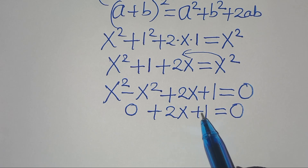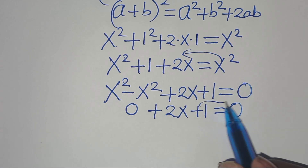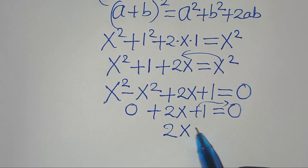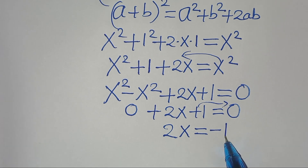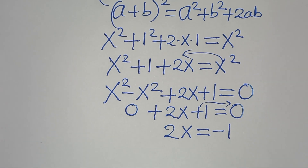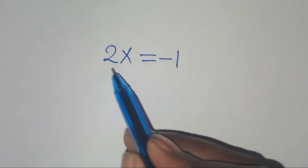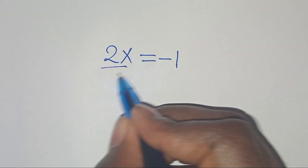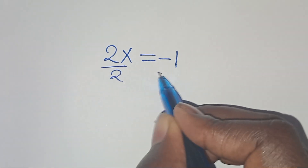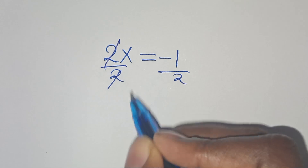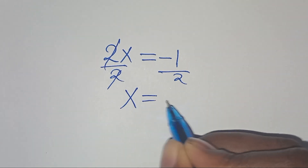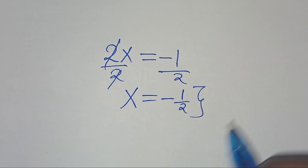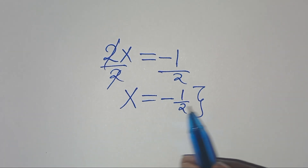From here, x squared minus x squared is 0, so we have 0 plus 2x plus 1 equals 0. Let's take plus 1 on the right-hand side so that we have 2x equals minus 1. Dividing both sides by 2, we have x is equal to minus a half.